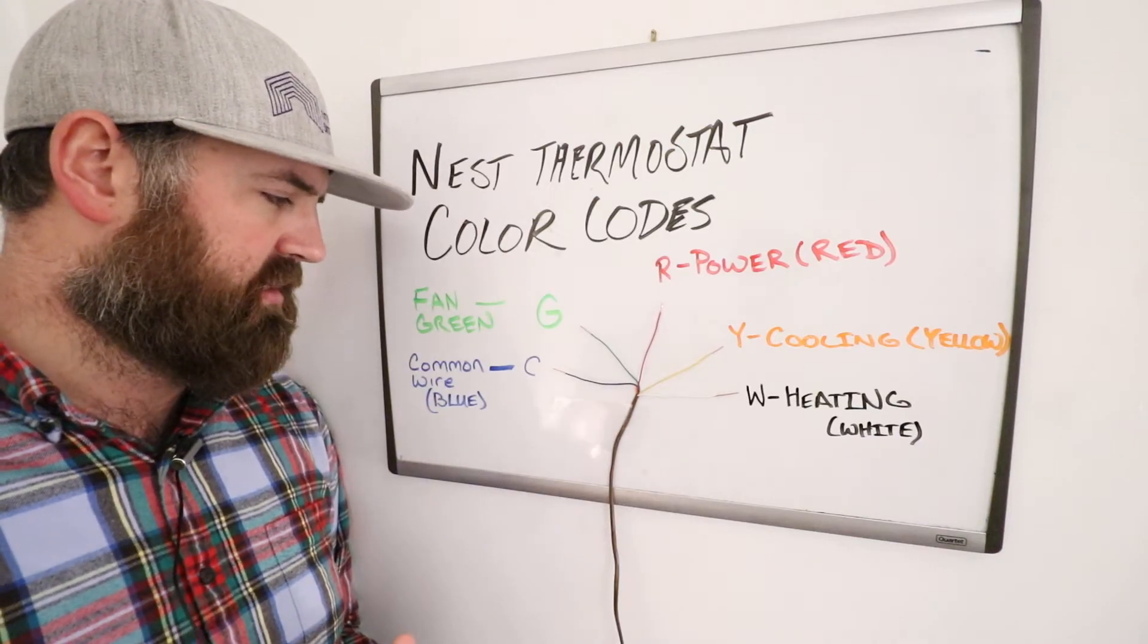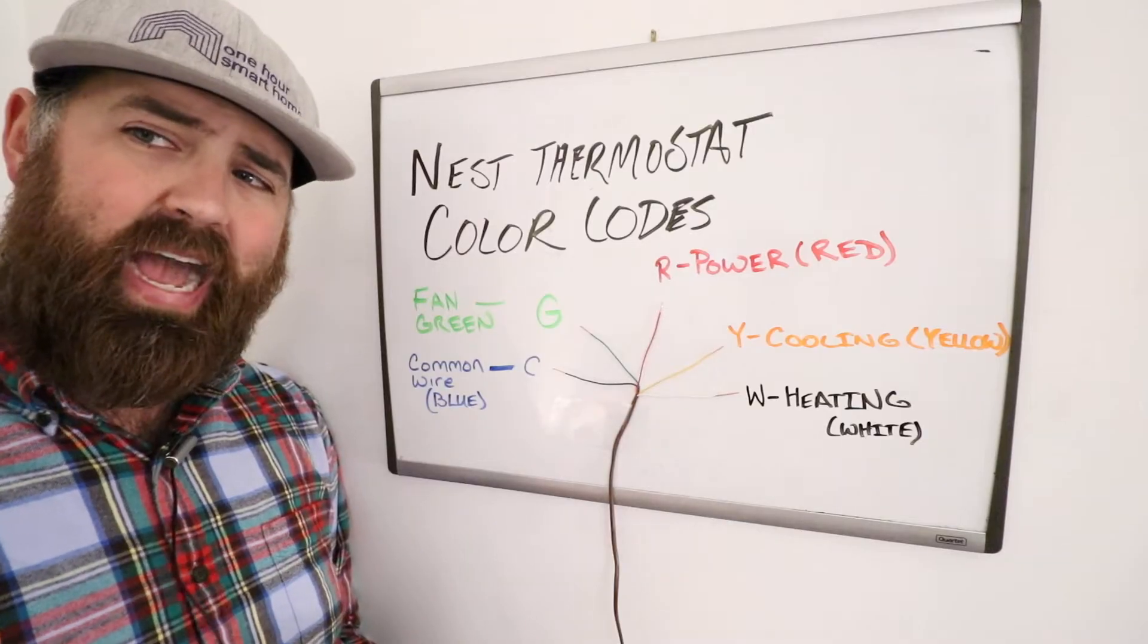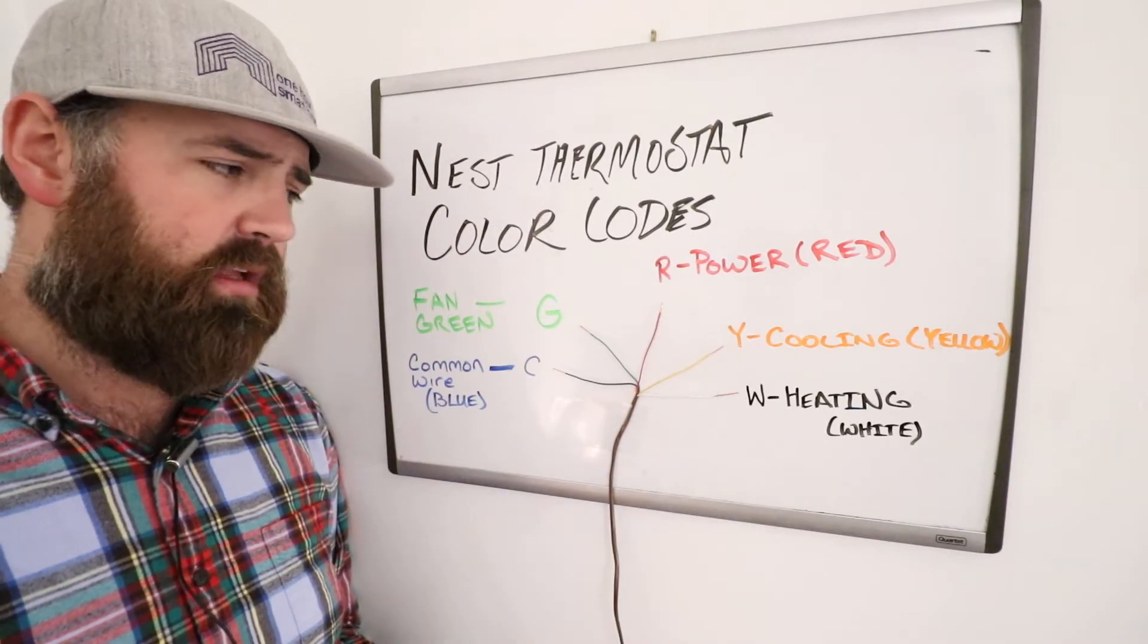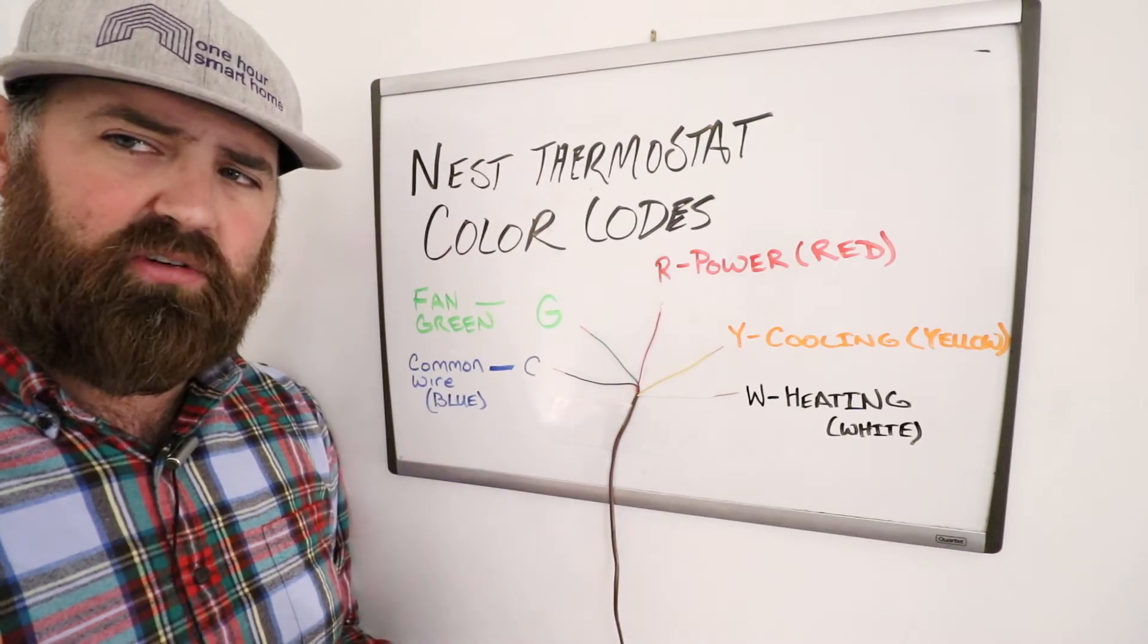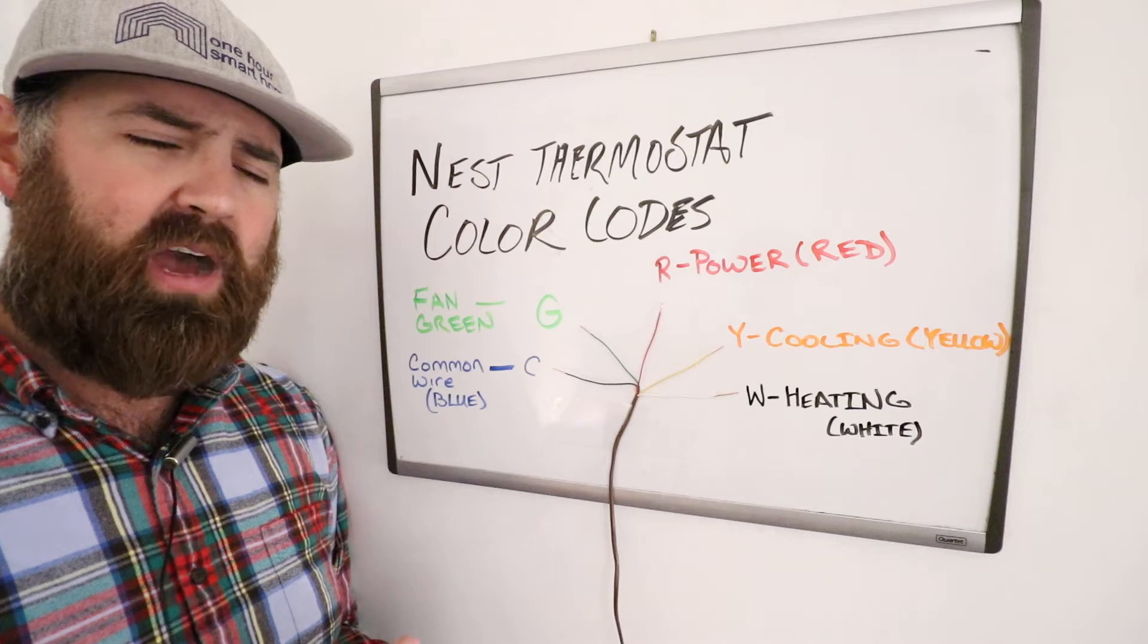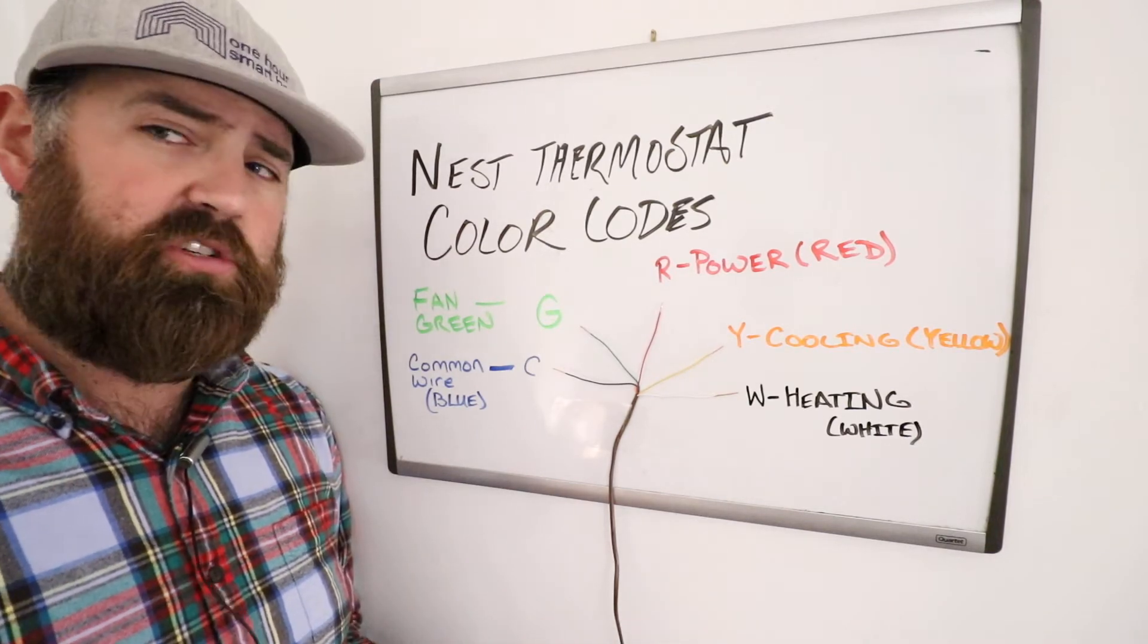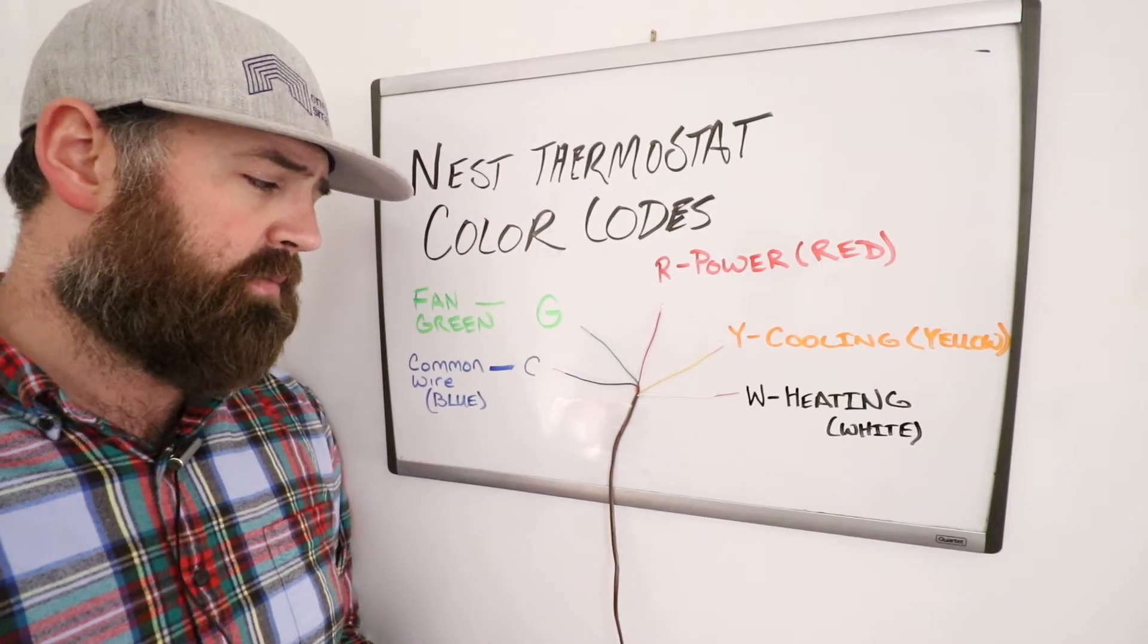Now the last one is the C-wire or the common wire, and that's typically blue. Not everybody has a common wire, but if you do have a common wire, you should definitely connect it. We've got other videos explaining what a common wire does, how to connect a common wire, or how to get a common wire connected, even if you don't have a common wire, which in that case you can use the G-wire, which we talked about. However, if you do have a common wire, connect it.